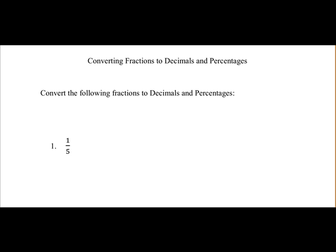Here we'll take a look at converting fractions to decimals and percentages. In our first example, we're converting 1 over 5. First we'll convert it to a decimal. To convert to a decimal, you simply divide the denominator, which in this case is 5, into the numerator, which is 1. So 1 divided by 5 is equal to 0.2.